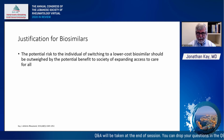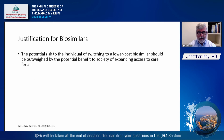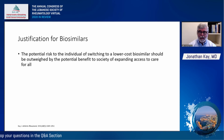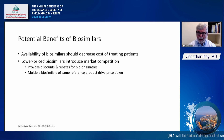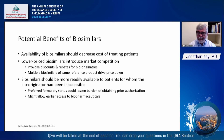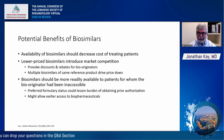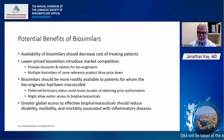The justification for biosimilars is one of the social contract — as Jean-Jacques Rousseau described in the Enlightenment — where the potential risk to the individual of switching to a lower-cost biosimilar should be outweighed by the potential benefit to society of expanding access to care for all. Potential benefits include decreased cost of treating patients, market competition provoking discounts and rebates for reference products, and multiple biosimilars of the same reference product driving the price down. Greater global access to effective biopharmaceuticals with lower cost should reduce the disability, morbidity, and mortality associated with inflammatory diseases.